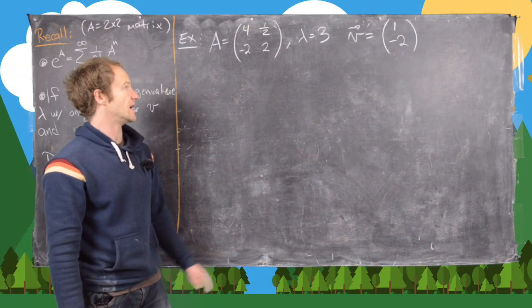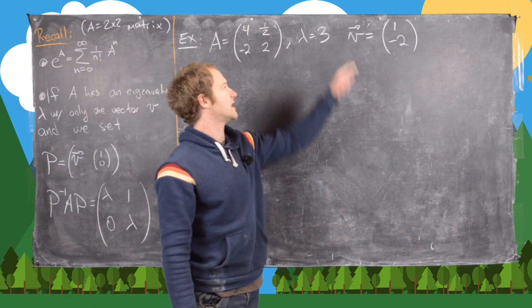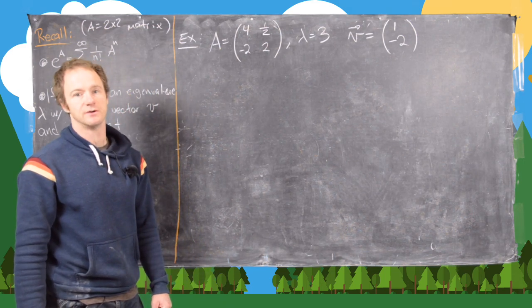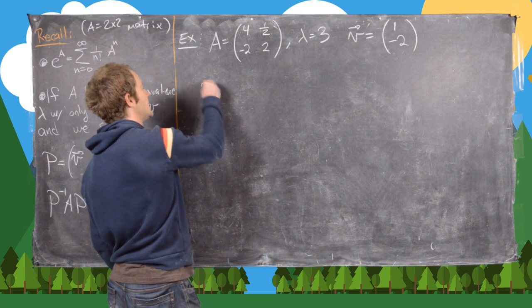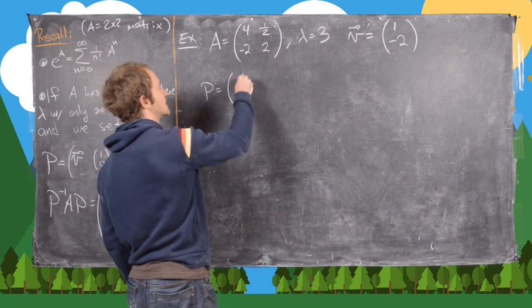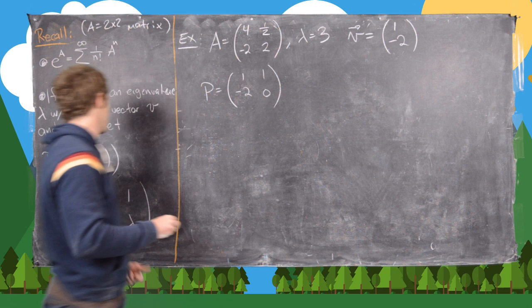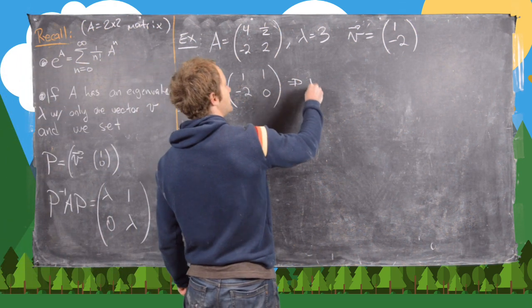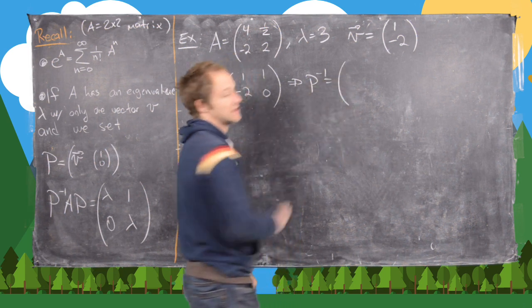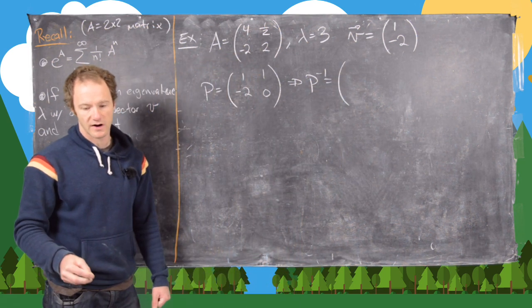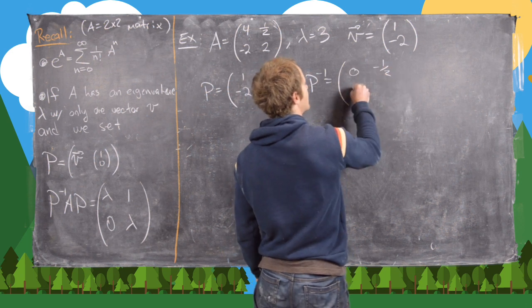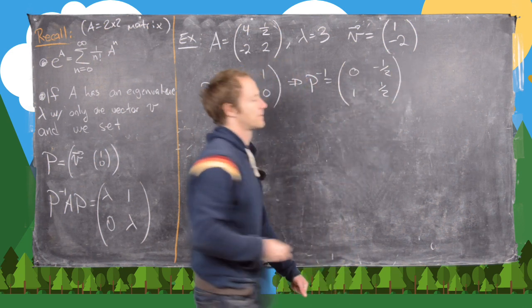Okay. So we got our matrix A. We found the eigenvalue 3 and the eigenvector (1, -2). So now notice if we set P equal to the following matrix—it's going to be [1, 1; -2, 0]—then that tells us that P inverse is, so I'll calculate that. Well, I've already calculated it. You get [0, -1/2; 1, 1/2].